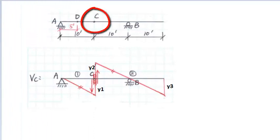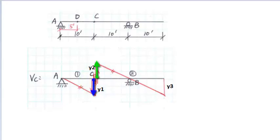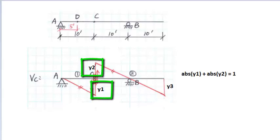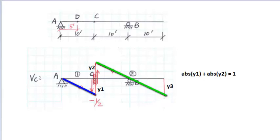Next, we will draw the influence line of the shear force at point C. To get the influence line of VC, we need to remove the shear resistance at C and break the beam into two segments AC and CB. Segments AC and CB are connected at point C with a vertical slider. The beam segments move in the positive shear direction at the slider; therefore, segment AC moves downward and segment CB moves upward. The relative vertical displacement at point C: distance Y1 plus distance Y2 equals 1. Segments AC and CB keep parallel after the movement and all the triangles are similar triangles.